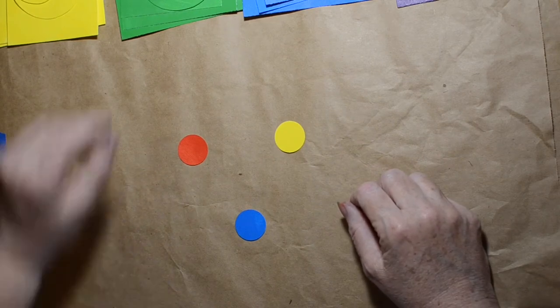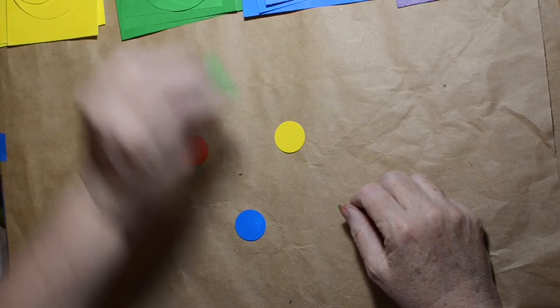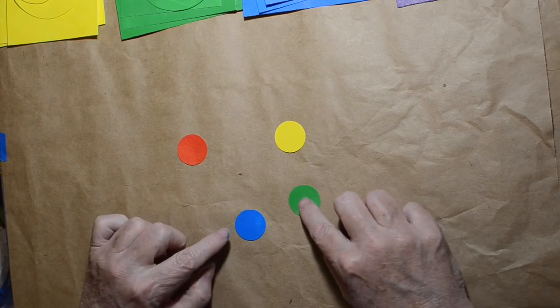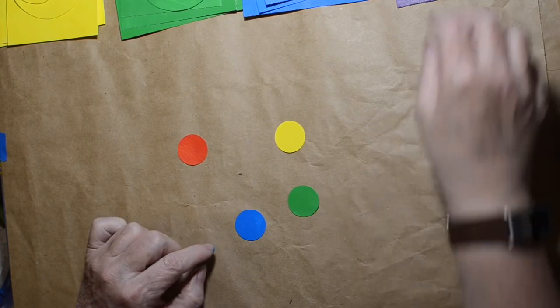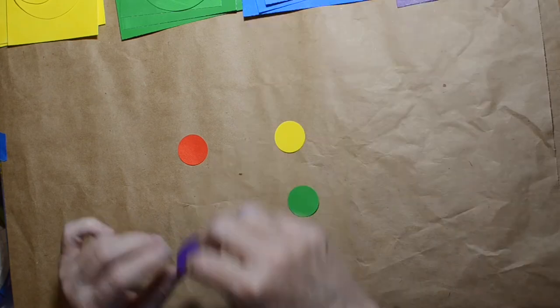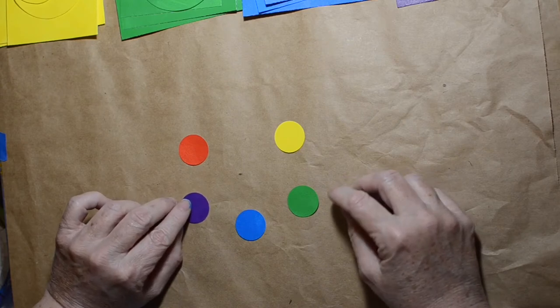So the first three colors I have here are your primary colors. That means they cannot be mixed with other colors, they cannot be mixed to create them. They can be mixed together to create other colors like blue and yellow make green and red and blue make purple and red and yellow make orange.